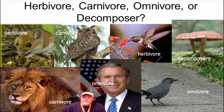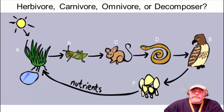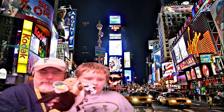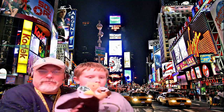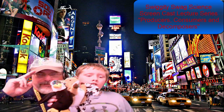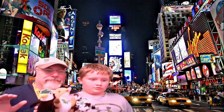Here are the answers. Here is a food chain — again, identify herbivore, carnivore, omnivore, or decomposer. I'll pause here if you want to give yourself some time. Here are the answers. Well, that's all folks — we'll see you next time. Careful, kids — bye!